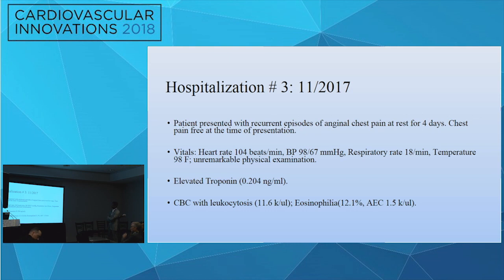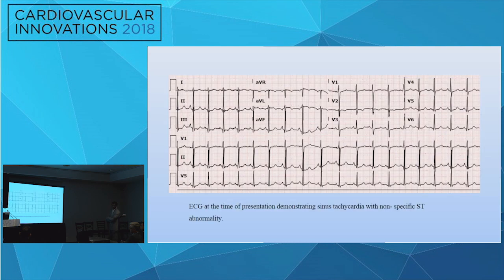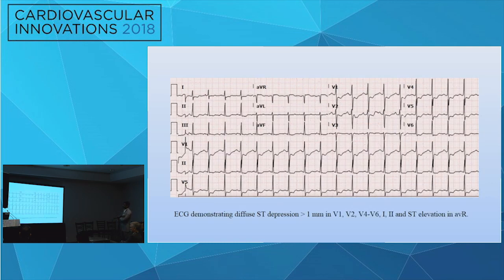She comes back again in November 2017 with recurrent episodes of chest pain at rest for four days. Her heart rate was 104, blood pressure was 98 over 67, and she had elevated troponins again with leukocytosis showing eosinophilia, with an absolute eosinophilic count of 1.5. This is the EKG from presentation without any specific changes when she arrived.